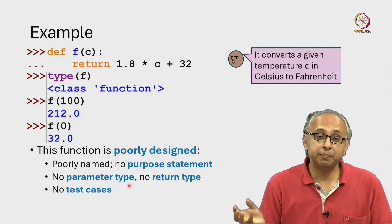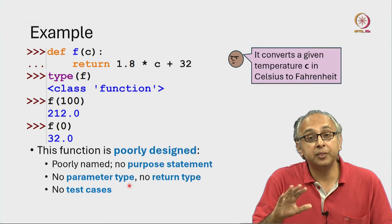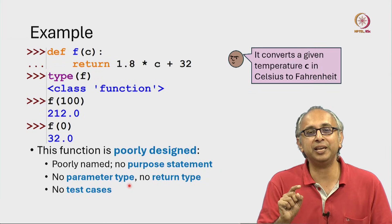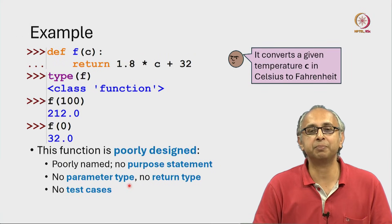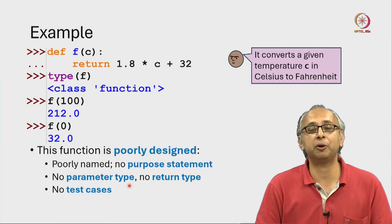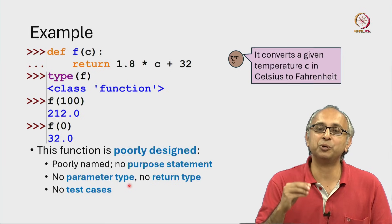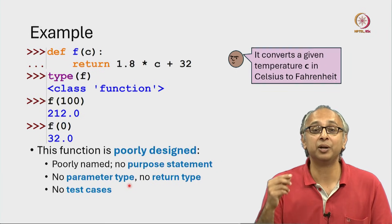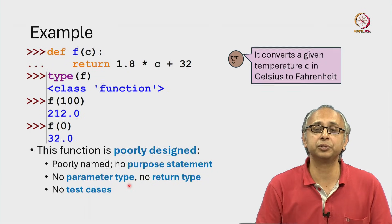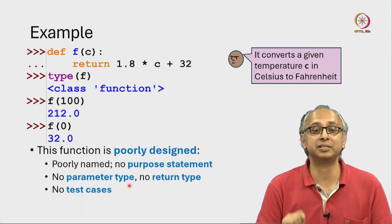That way, when somebody actually passes some data to your function, other tools — not Python itself but other supporting tools — can check to see if you are passing the correct type of data. These other tools are extremely helpful when we are dealing with very complex code with lots of functions, because sometimes at the time when you are calling those functions you may forget, as a programmer, what type of data you are supposed to pass. And if you have these other tools, they can at least give you a warning if you give it the wrong type of data.